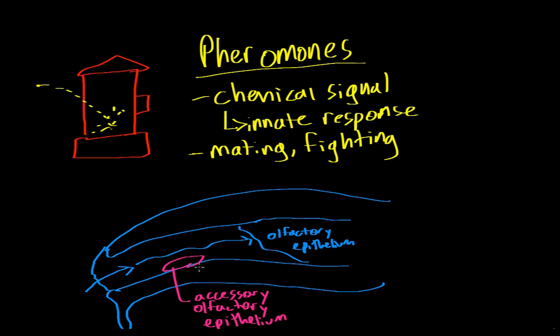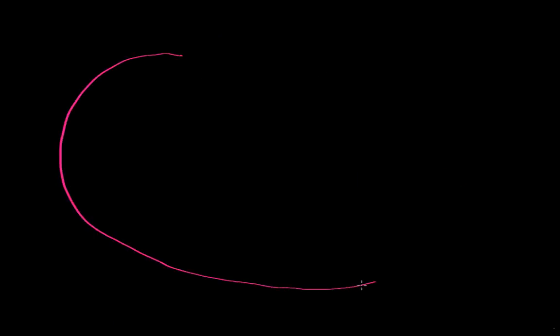And the accessory olfactory epithelium actually sends projections to an accessory olfactory bulb. So this is the accessory olfactory bulb. So the olfactory epithelium sends information to the olfactory bulb. But the accessory olfactory epithelium sends information to the accessory olfactory bulb. So let's look at the particular cells in the accessory olfactory epithelium that are responsive to pheromones.